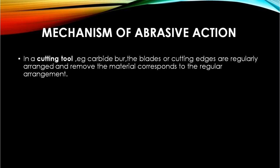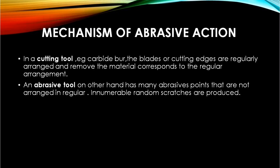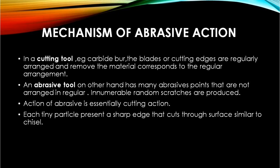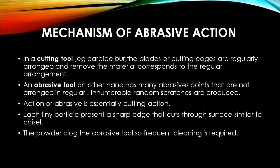Mechanism of abrasion: cutting tools like carbide burs have regularly arranged cutting edges and remove material in a regular arrangement, whereas abrasive tools have irregular cutting edges resulting in innumerable random scratches. Cutting is the essential action of abrasives — each tiny particle represents a sharp edge that cuts through the surface, similar to a chisel. Powder blocks the abrasive tool, so frequent cleaning is required.